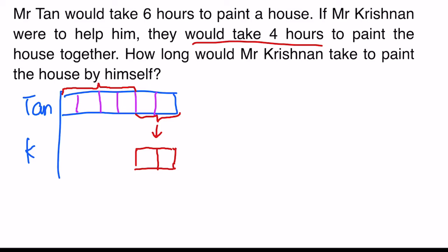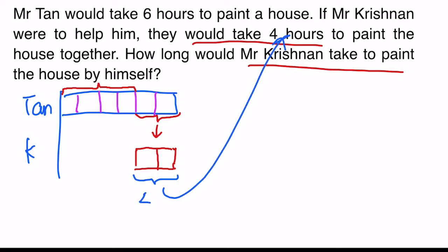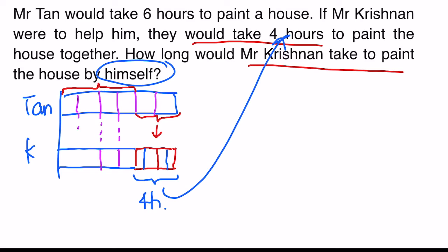But the question wants him to paint by himself. In those two units that he painted, if we look at the duration he took, it's not two hours but four hours. So I'm going to cut each unit up — which means one unit becomes two hours instead of one hour. Since he's painting by himself, I'm going to draw the rest of the units the same way. He took twice the time per unit compared to Mr. Tan, so I cut each unit into two, and do the same for the remaining units.